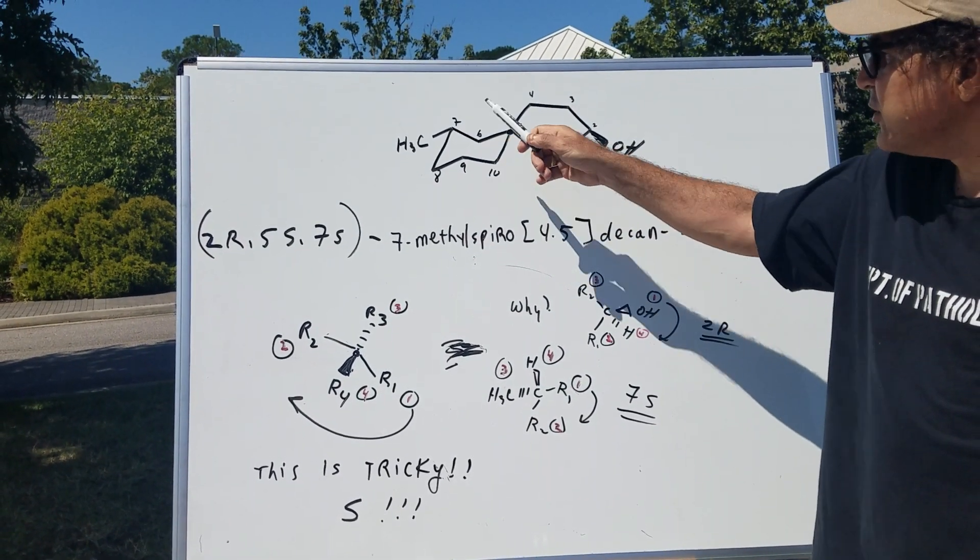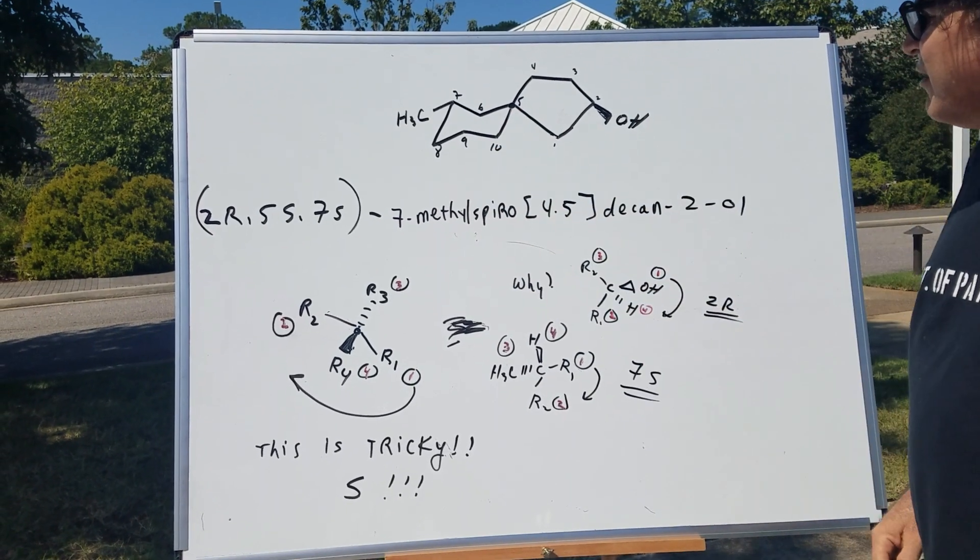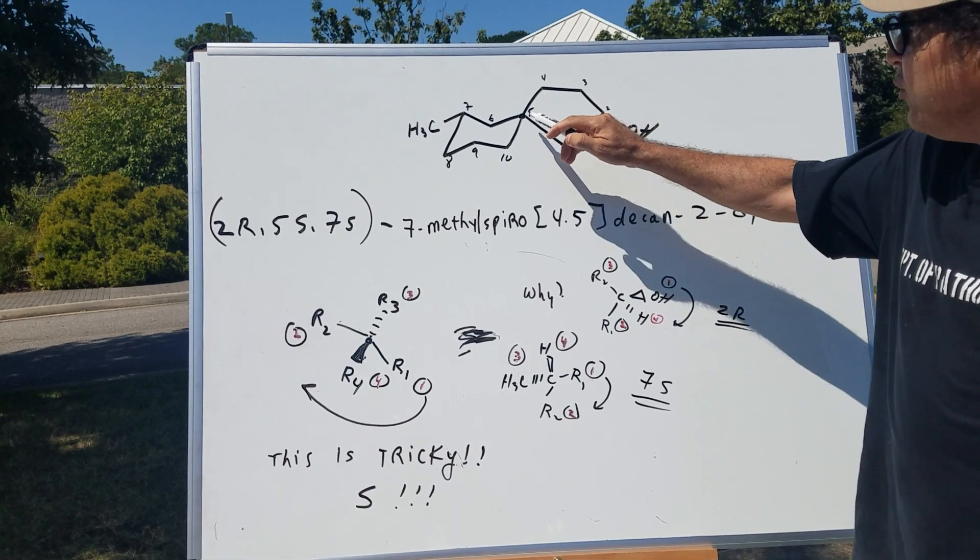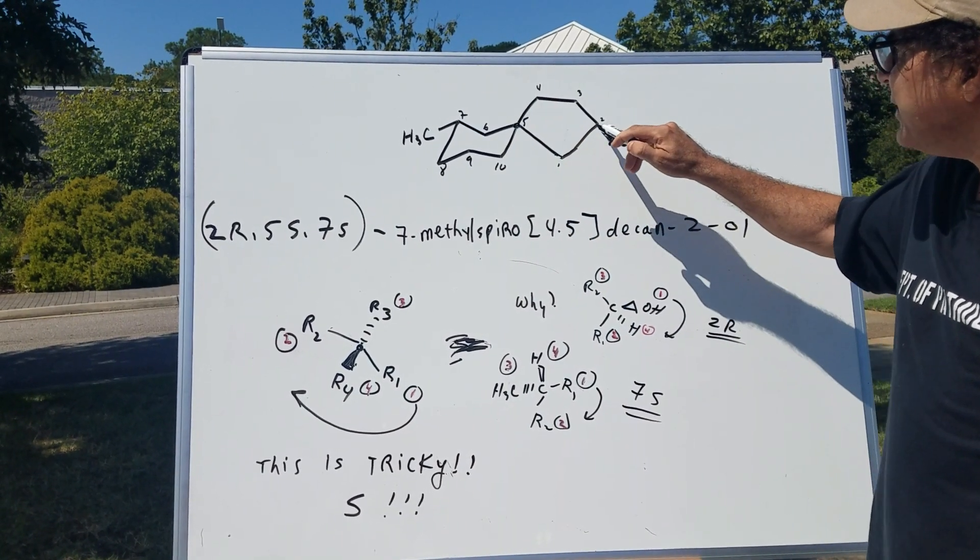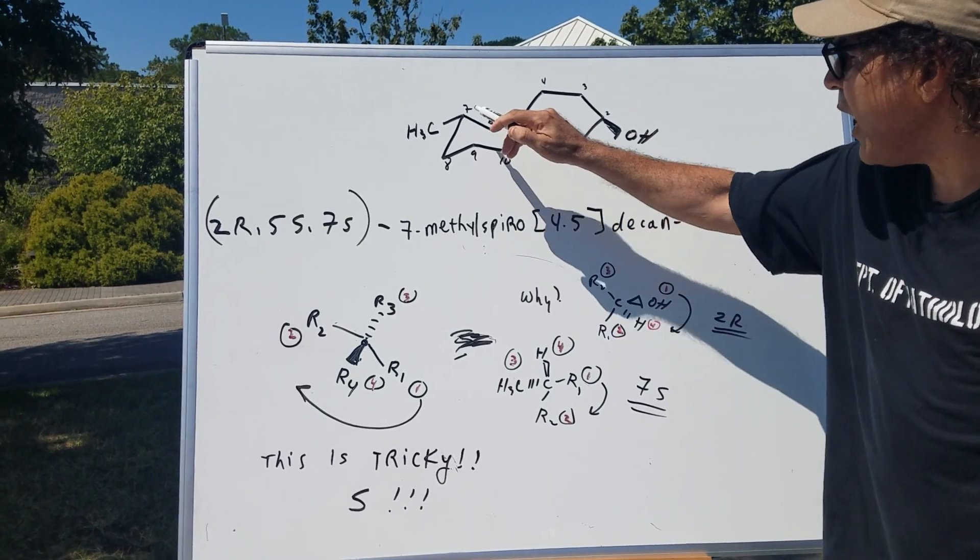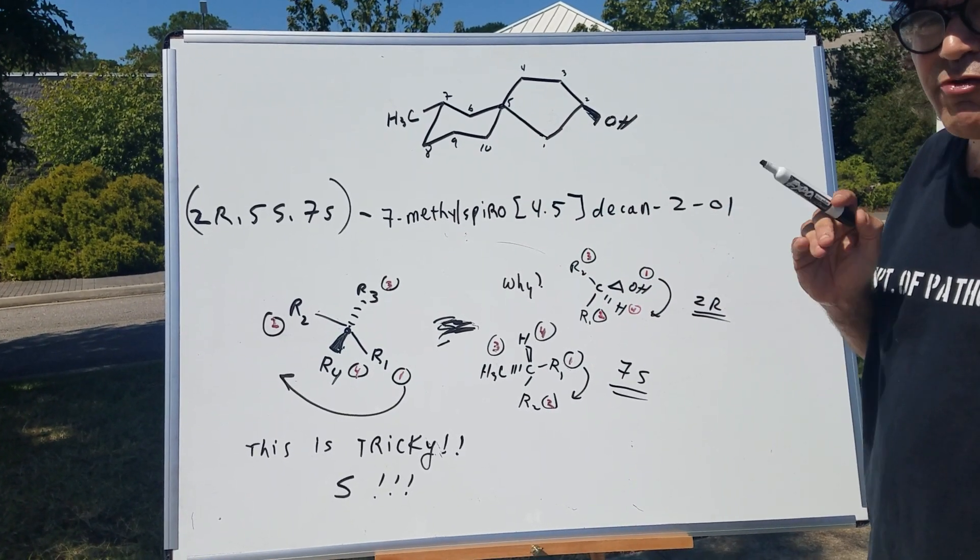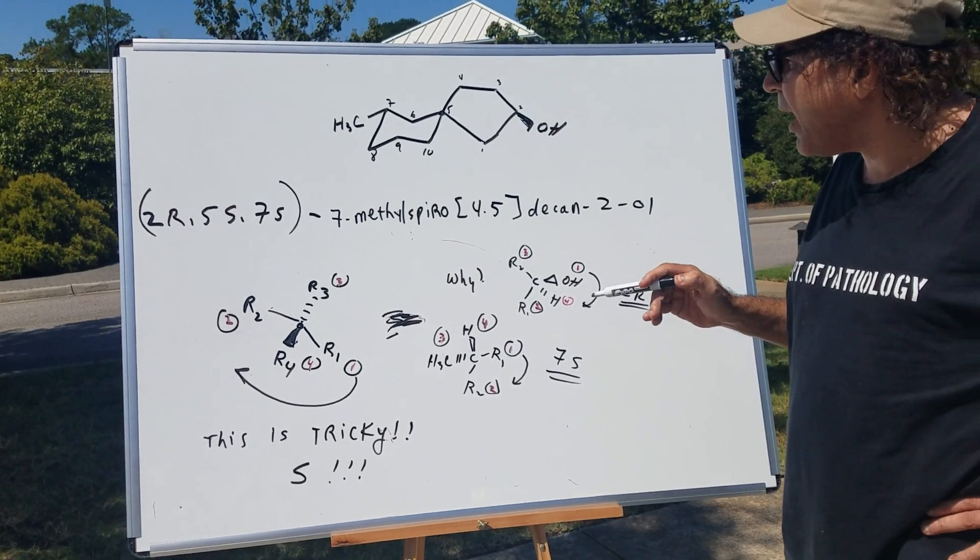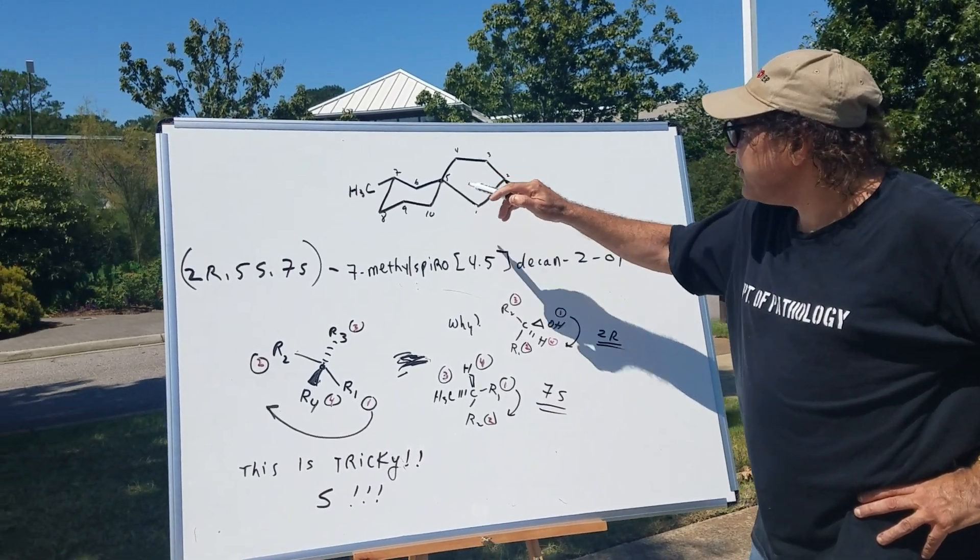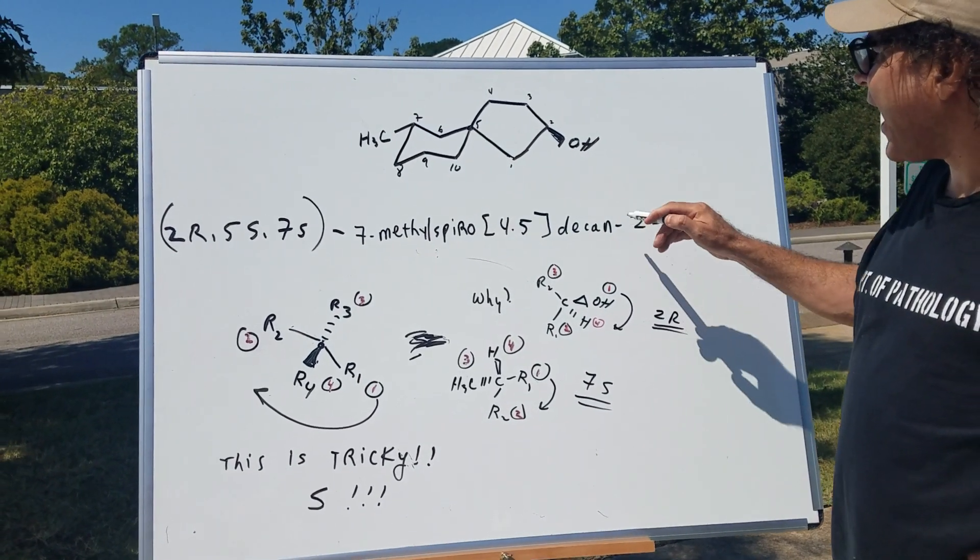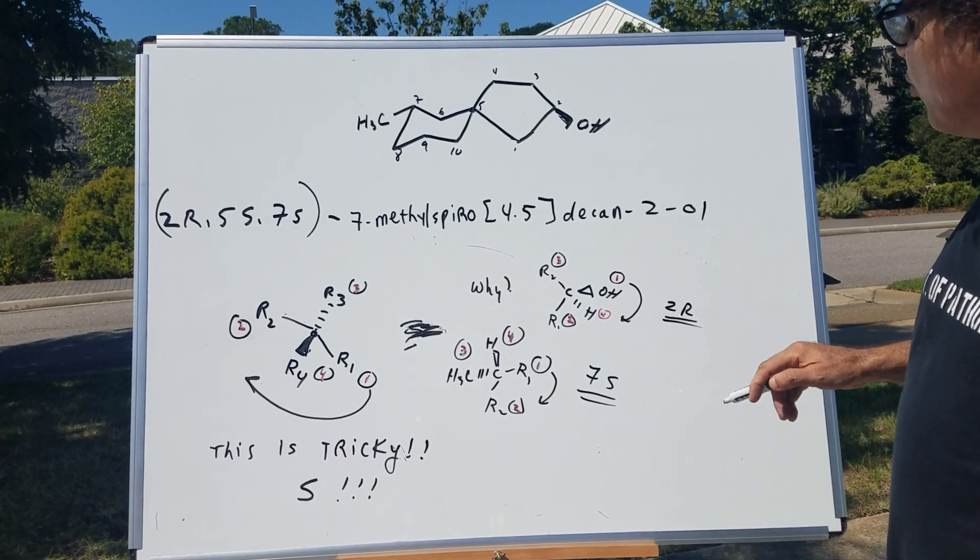So let's name it first without doing any stereochemistry. You're going to have 7-methyl. Now, if you look at the connecting carbon, there's 4 carbons here, and there's 5 carbons here. In ascending order, you heard that right. It's opposite of what we do for bicyclocompounds. So you're going to have 4, 5, and there's 10 carbons, decan, and the OH is on the number 2, so it's 2-ol.